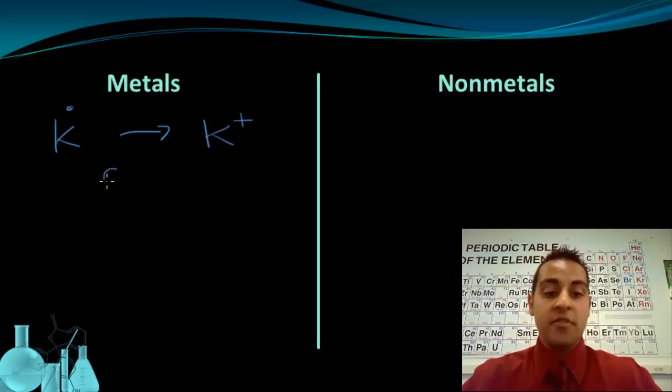And as we've mentioned before, this is a cation. And the name for this is simply the element potassium and the term ion. So K+ is a potassium ion. And this behavior of losing valence electrons to gain a noble gas configuration in the valence shell is very common for elements in group 1A, 2A, and 3A.